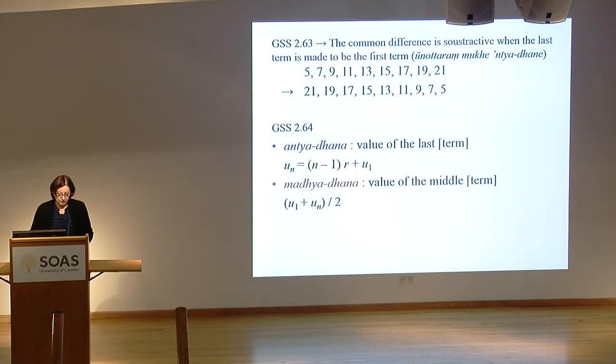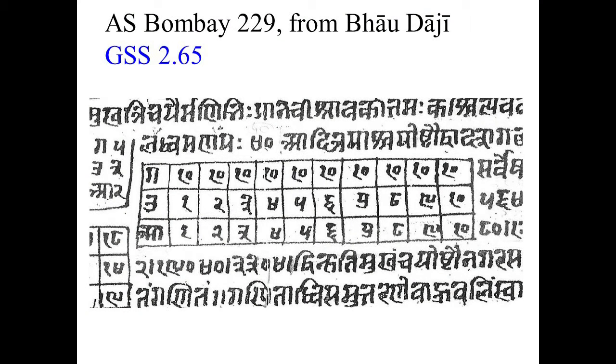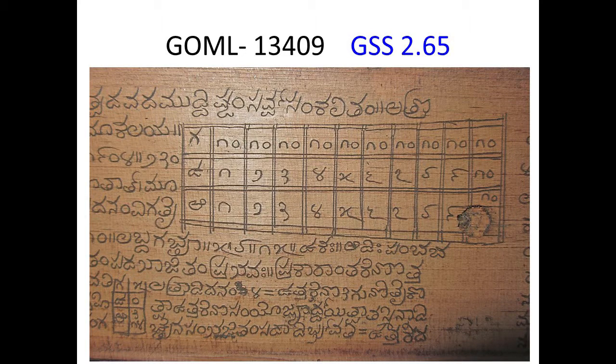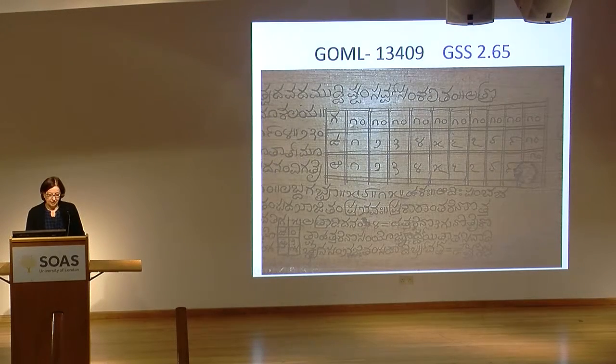The last technical terms, which are very common and used by all authors, are the last term and the middle term. Now let's see how the sample problems are presented in the manuscript. In this manuscript, there is an exercise where you have to calculate ten sums because you have ten series. The first line always has g for gacha, then u for uttara, and r for adi. This presentation appears to be the same in all manuscripts, whatever the region, whether paper manuscript or palm leaf. Here is the palm leaf manuscript from Madras with the same exercise, and in Kannada script you have the same formulation with the three values.